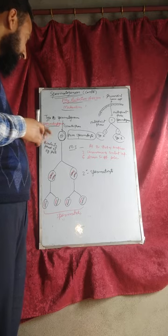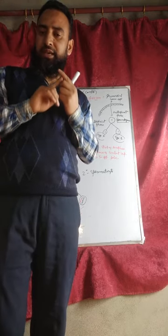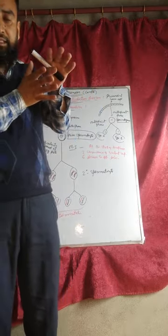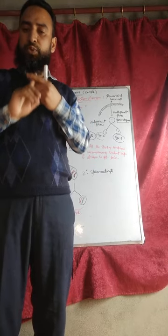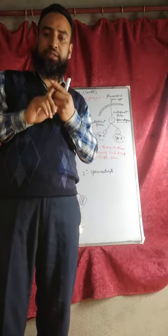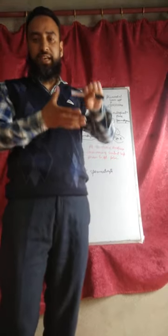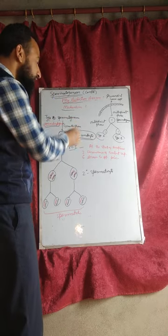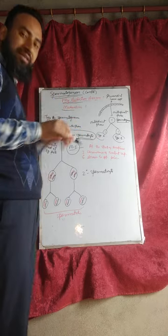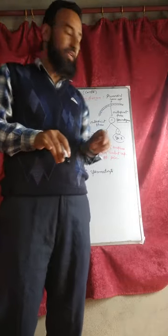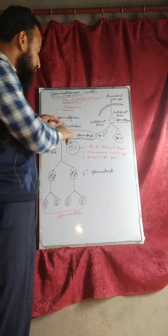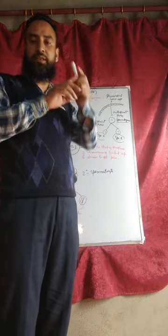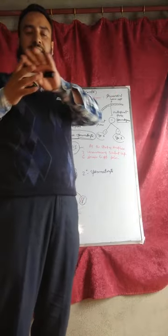Now, the spermatogonium enters the maturation phase. The maturation phase is characterized by meiotic division. Meiotic division is a double division — meiosis first and meiosis second. The primary spermatocyte enters into meiosis first, which is a reductional division. Here the actual reduction in the number of chromosomes takes place during meiotic division first. It is divided into sub-phases: prophase I, metaphase I, anaphase I, and telophase I.